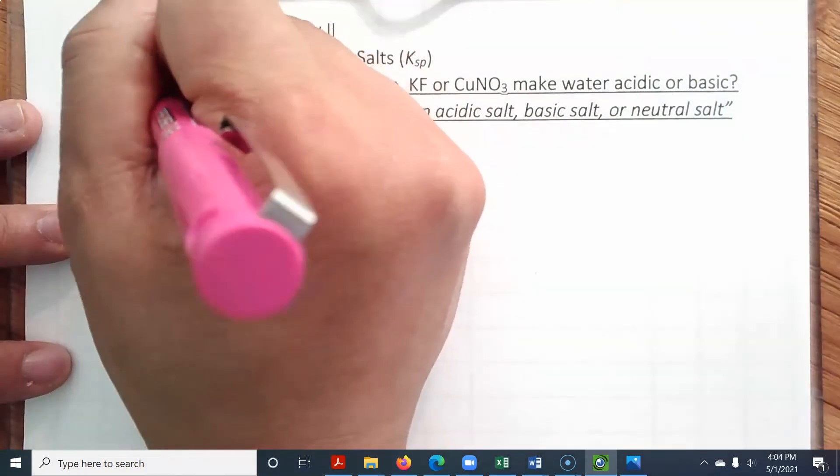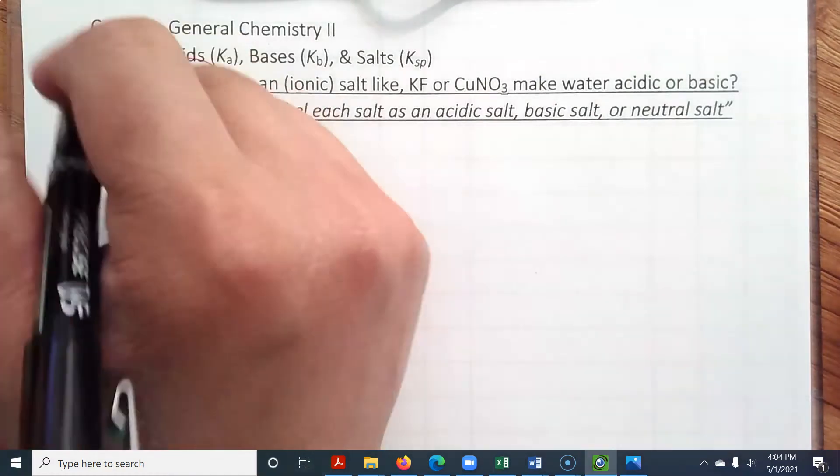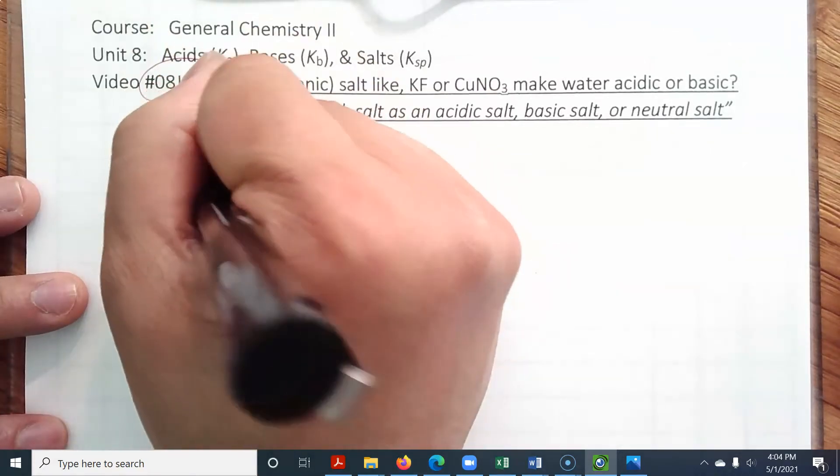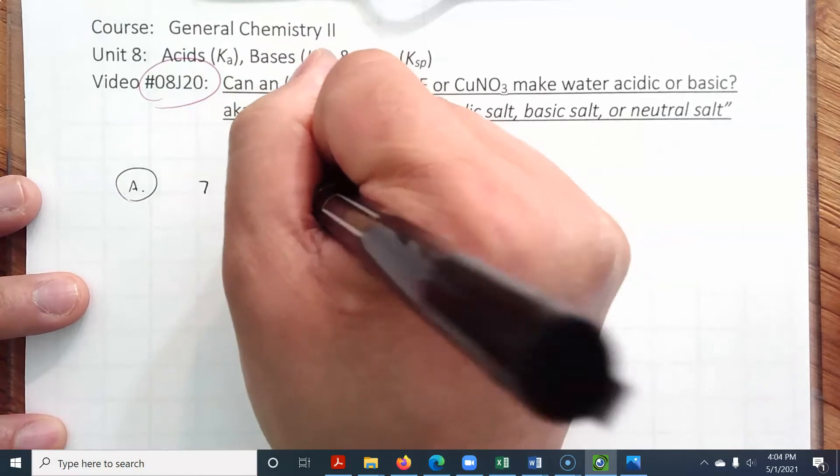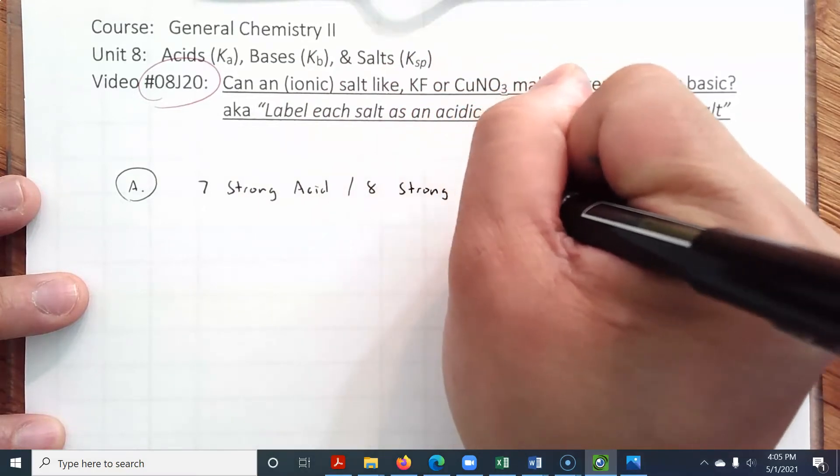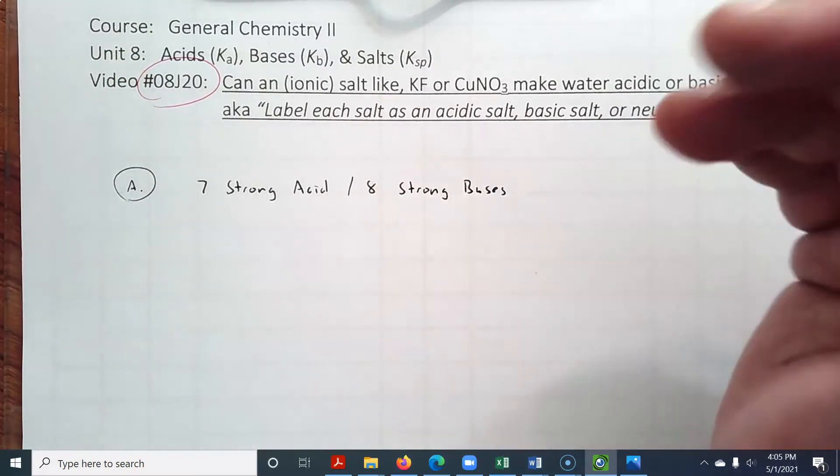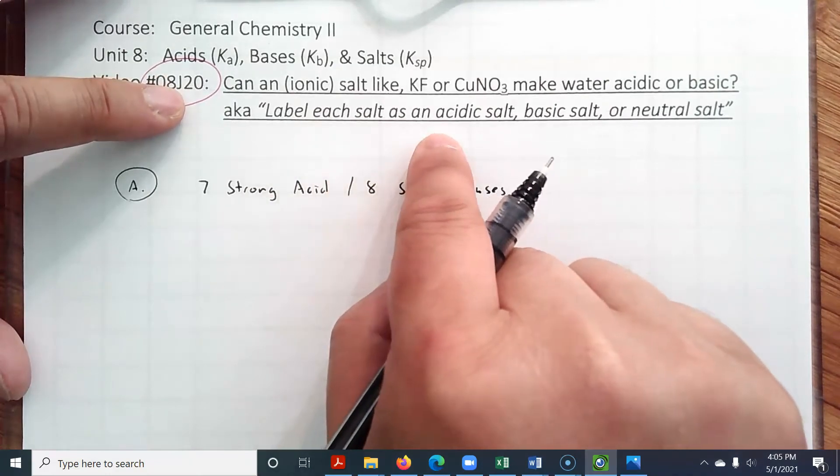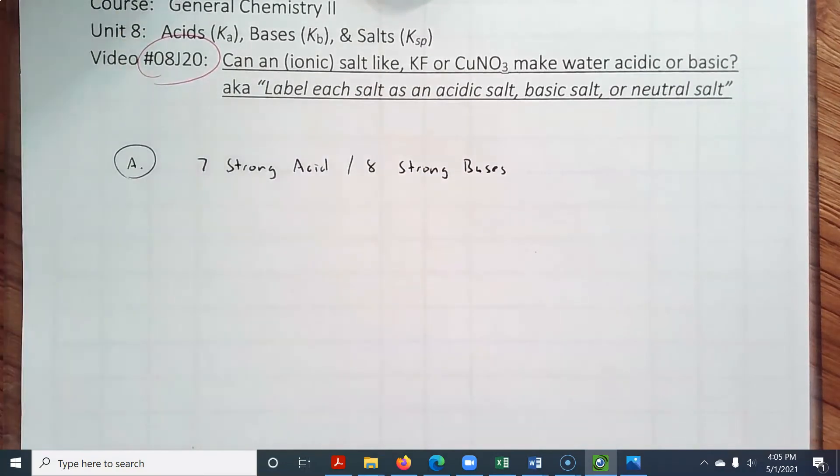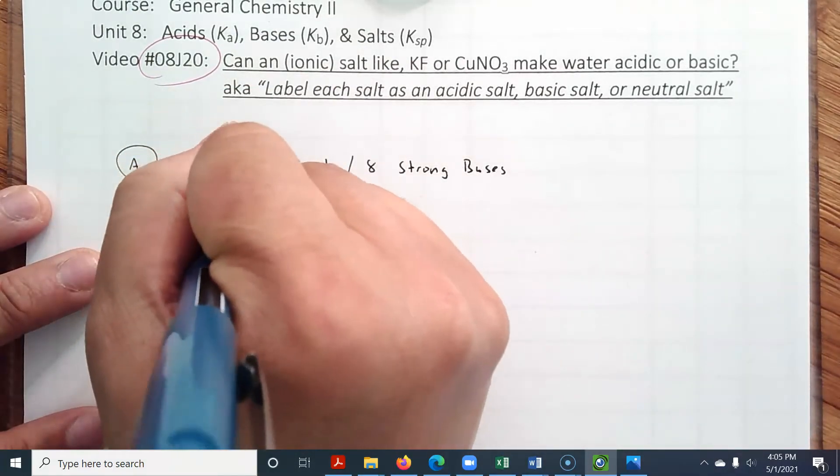Before we get into this specific question, let us remind ourselves what the 7 strong acids and 8 strong bases are. By the way, this whole topic is meant to answer the question: label each salt as an acidic salt, basic salt, or neutral salt. But for us to do this properly, we need to remember our list. So, strong acids.